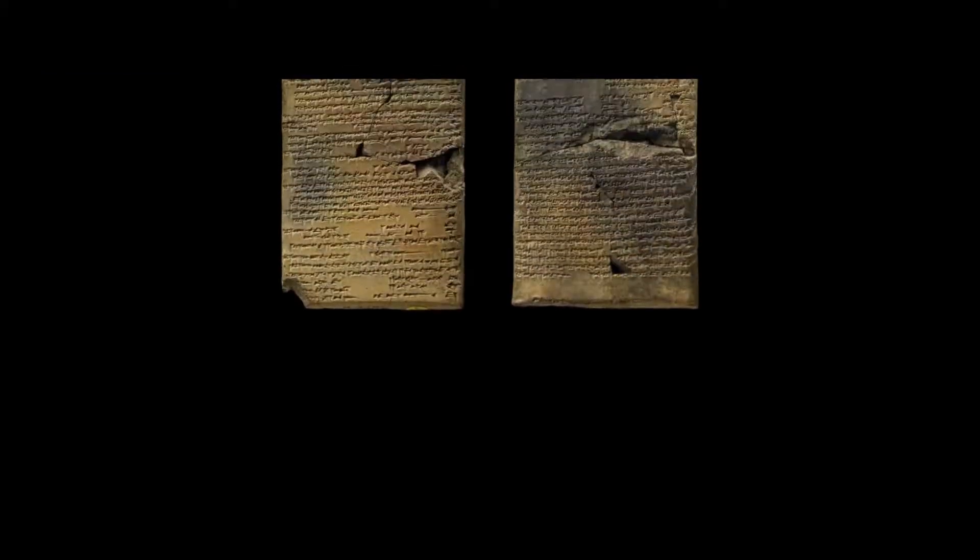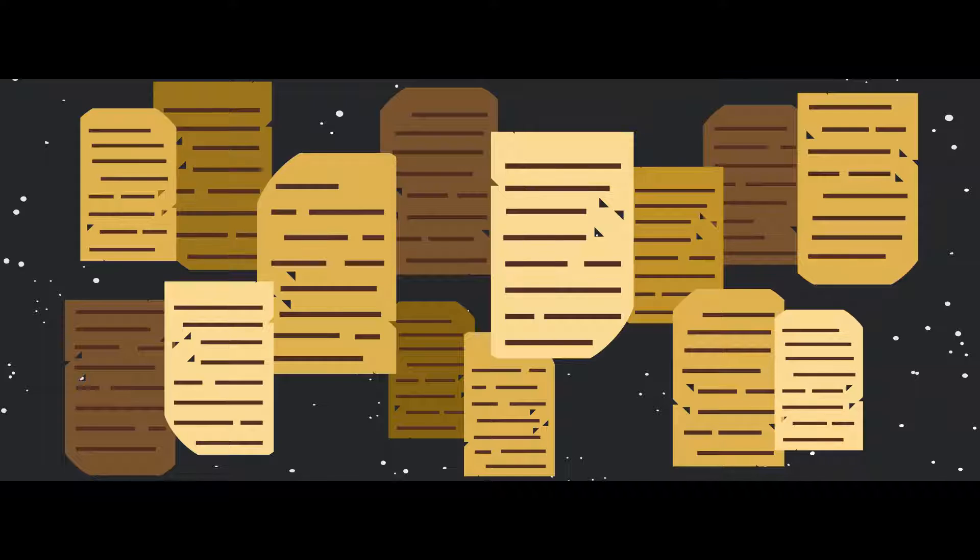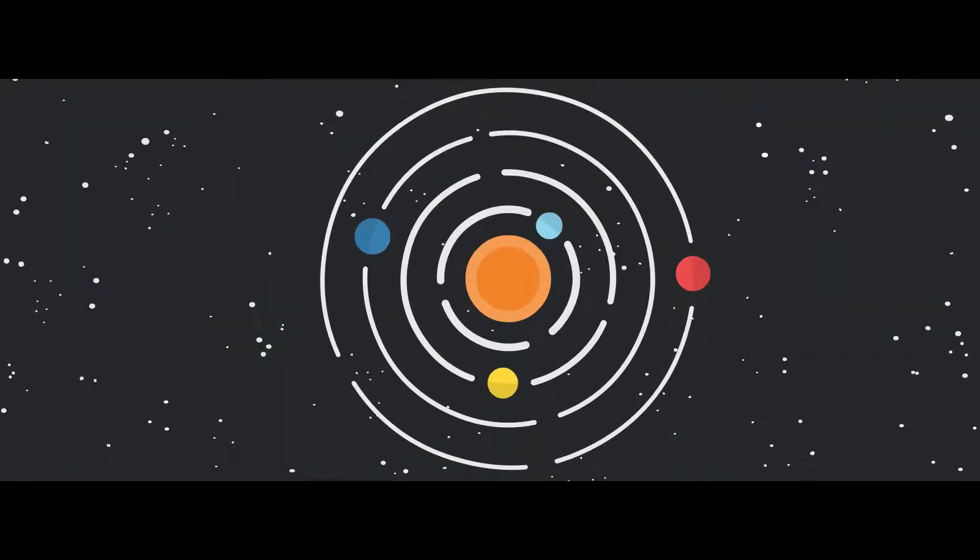One of the most significant documents of Babylonian astrology is the Enuma Anu Enlil. These tablets contain around 7,000 omens spread out between 68 to 70 tablets describing the relationships between the stars and the earth.